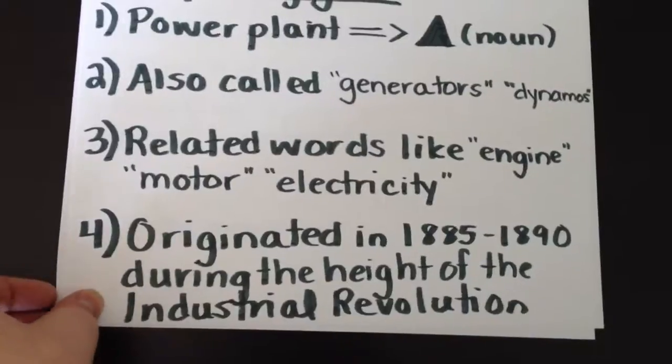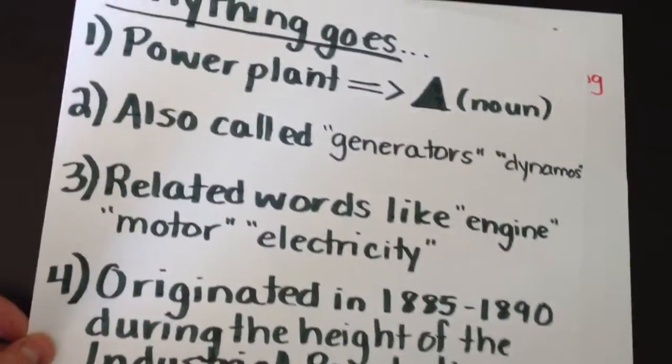The word power plant originated in 1885 to 1890 during the height of the Industrial Revolution.